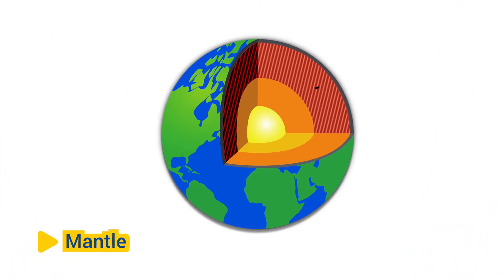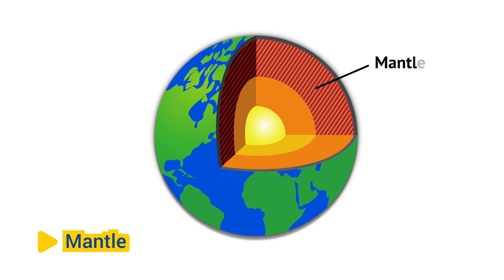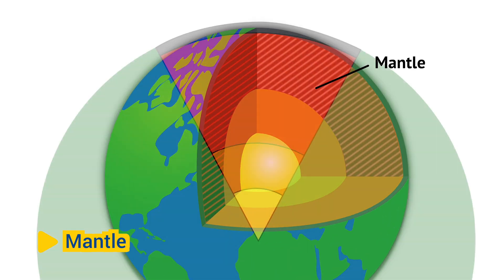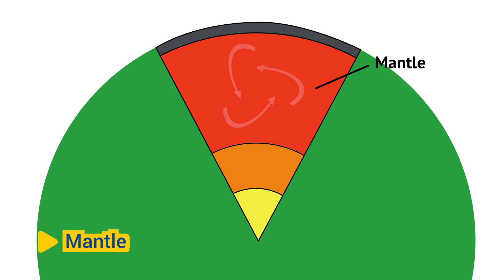Mantle: Beneath the crust lies the mantle, the thickest layer of the Earth. The mantle is composed of solid rock that can flow over long periods of time, a phenomenon known as mantle convection. It is divided into the upper mantle and the lower mantle.